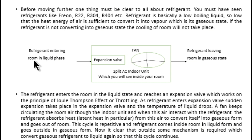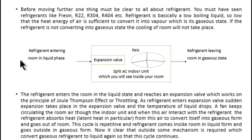The refrigerant enters the room in liquid phase and leaves the room in gaseous state. The refrigerant enters in liquid state and reaches the expansion valve. This expansion valve works on the principle of the Joule-Thomson effect, or throttling. As the refrigerant enters the expansion valve, a sudden expansion takes place and the temperature of the liquid drops significantly.